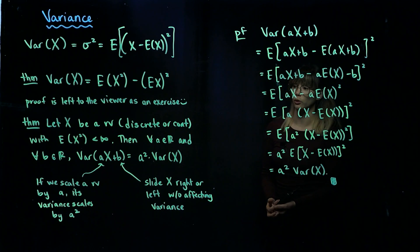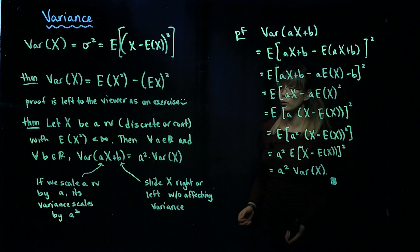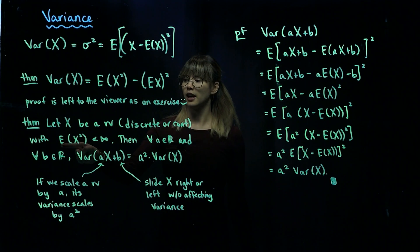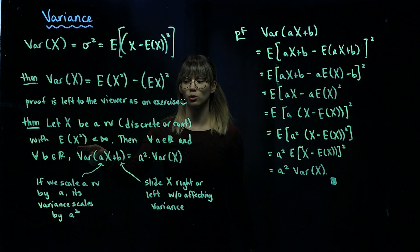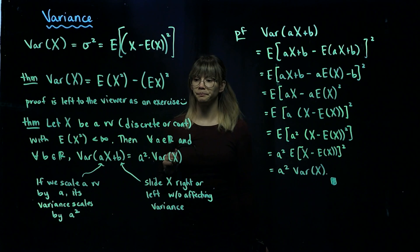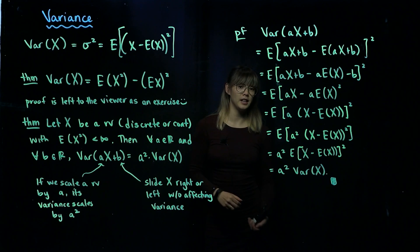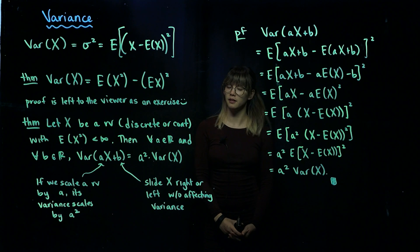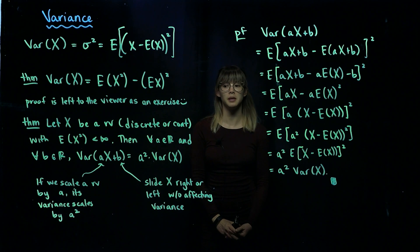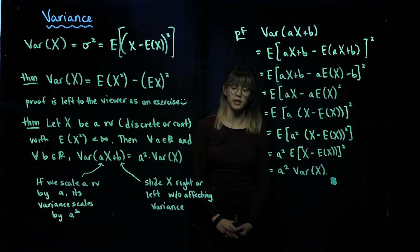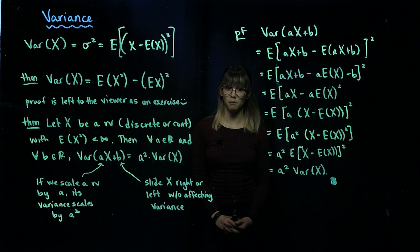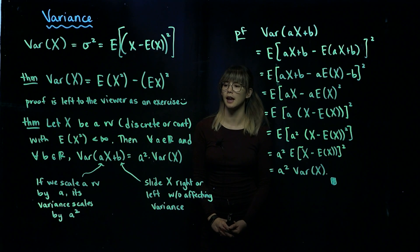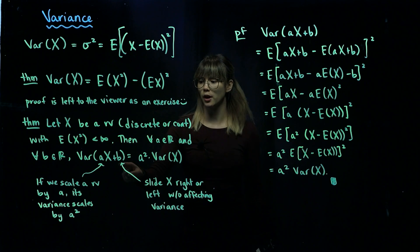Let X be a random variable, either discrete or continuous, with the expected value of X squared being finite. Then for any real number a and any real number b, the variance of aX plus b is going to be equal to a squared times the variance of X.